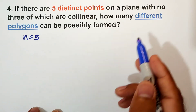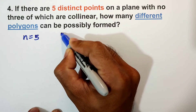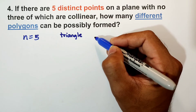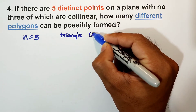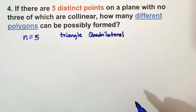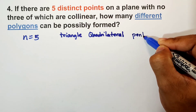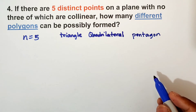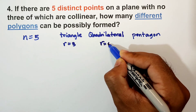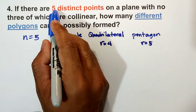From these five points, what polygons can we make? We can form a triangle, a quadrilateral with four sides, and of course a pentagon with five sides or vertices. So R is equal to three for triangle, R is equal to four for quadrilateral, and R is equal to five for pentagon. We can only form up to pentagon since we have only five distinct points.